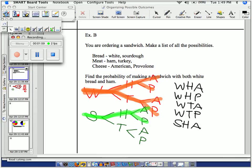You can make a SHA. You can make a SHP sandwich. You know, sourdough, ham, provolone. You can go sourdough, turkey, American. Sourdough, turkey, provolone.